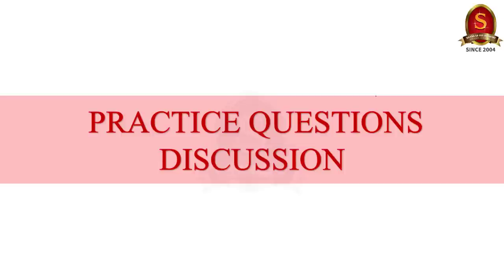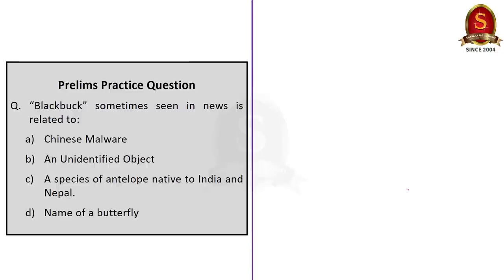Now let us move on to the practice prelims question discussion. We have three prelims questions today, one of which is a quiz question for you. The first question asks: 'Black buck, sometimes seen in news, is related to — A. Chinese malware, B. an unidentified object, C. a species of antelope native to India and Nepal, D. name of a butterfly.' From our discussion, the correct option is C — a species of antelope native to India and Nepal.